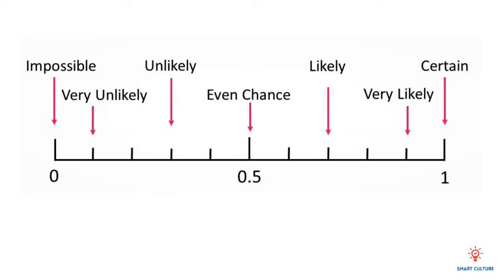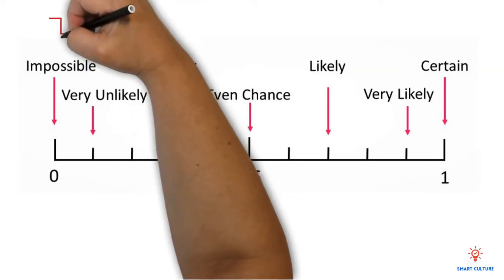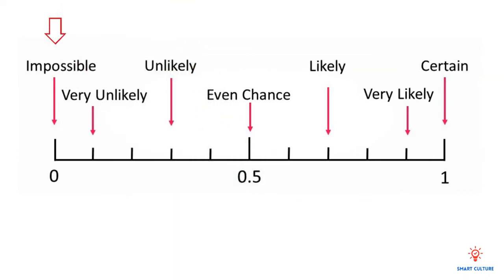This scale is a continuous line that starts with impossible events at the left-hand end, and it ends with certain events at the right-hand end. All the probabilities must fall somewhere on this line.